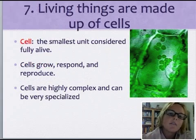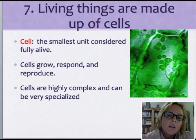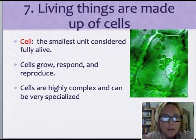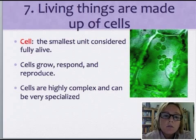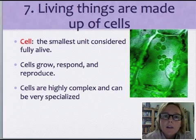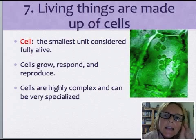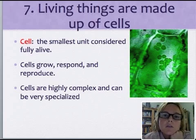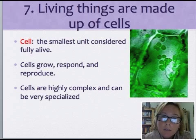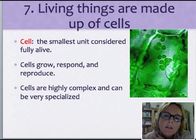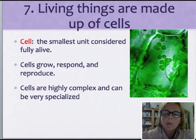The seventh characteristic is that all living things are made up of cells. The cell is the smallest unit considered fully alive. Anything that's alive is made up of at least one or more cells. Cells grow, respond, reproduce, and multiply, and can be highly complex and specialized, made up of tiny organelles that do different jobs. The cell on the right is a plant cell — notice it's green and roughly square-shaped, which is typical of plant cells.